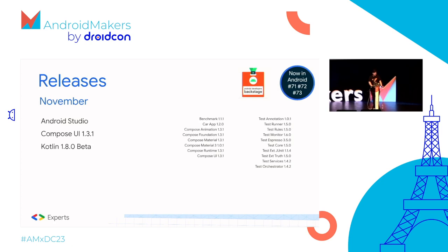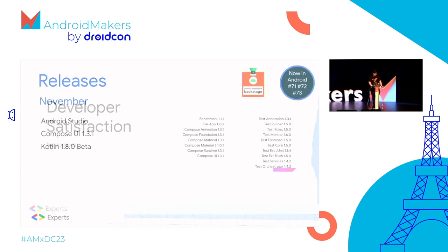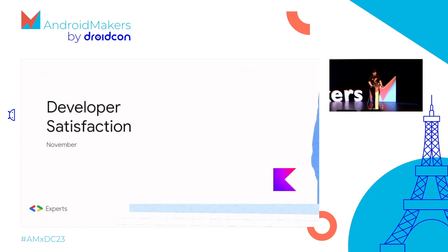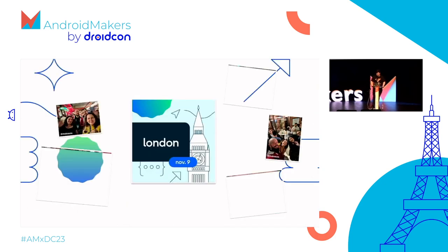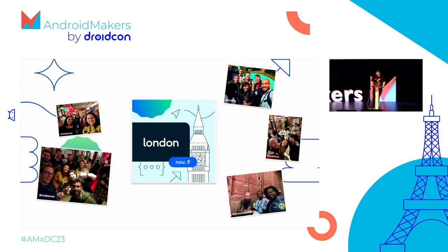JetBrains released Kotlin 1.8.0 Beta and published the results of the developer satisfaction survey — no surprise, developers are satisfied with Kotlin. The Dev Summit moved on to London, covering security, privacy, and personalization capabilities, with some very important drinks and group photos.